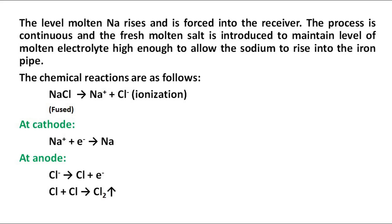The chemical reactions are as follows. Ionization of sodium chloride takes place to produce sodium cation Na⁺ and chloride Cl⁻ ion. At the cathode, sodium cation Na⁺ takes an electron to give sodium. At the anode, chloride Cl⁻ ion forms chlorine, liberating one electron. The obtained chlorine reacts with another chlorine atom to form chlorine gas molecule Cl₂.